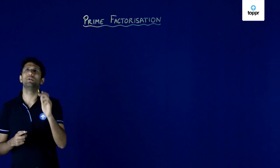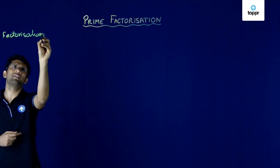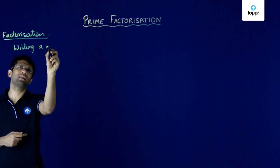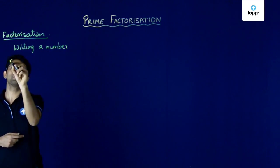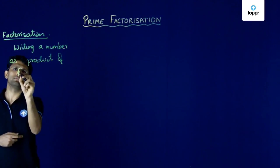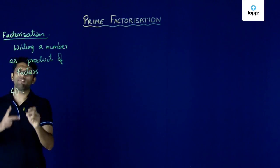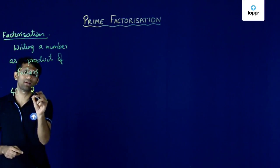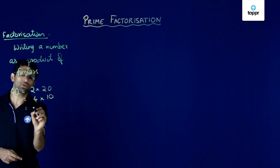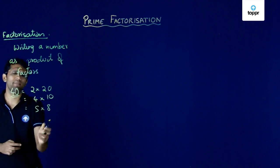We know what factorization is. Factorization means writing a number as a product of its factors. So if I have a number such as 40, then I can write 40 as a product of its factors. I can write this as 2 x 20, or as 4 x 10, or as 5 x 8 and so on. I can write 40 as a product of factors in many such ways.